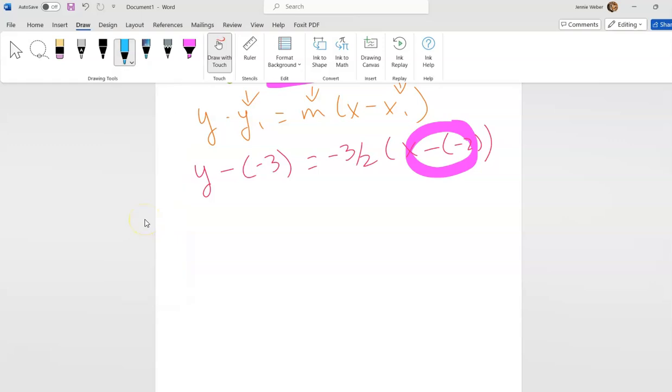So these are going to cancel out. Then at this point, you could leave it like this - sometimes MyMathLab lets you - but I like to put it in slope-intercept form because usually I would be turning around and graphing it.